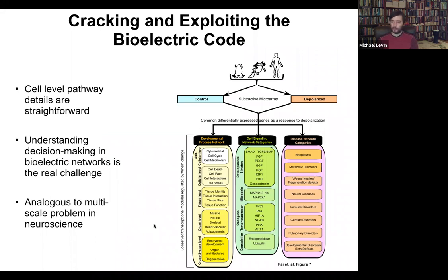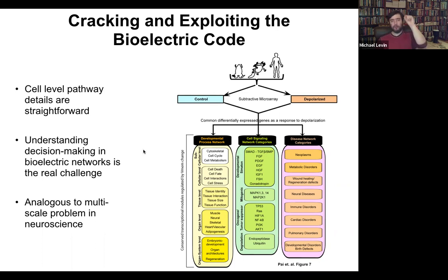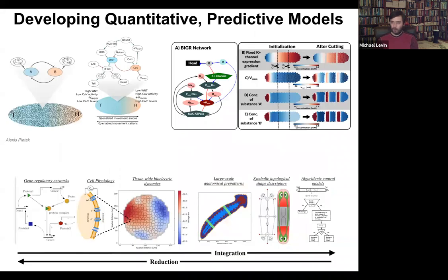What's interesting is that these answers as to how it works on a single cell level have been fairly unhelpful in understanding the large-scale picture that we're really interested in. It's very much analogous to the multi-scale problem in neuroscience: you can track the pathway, you can go from the channel to the transduction machinery, which genes are downstream — but that actually leaves open much deeper questions about how the collective makes decisions.